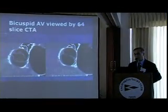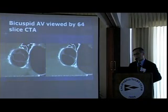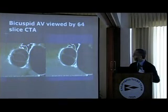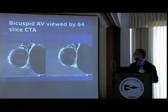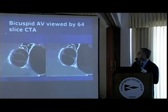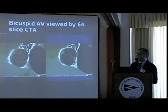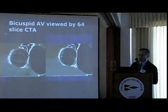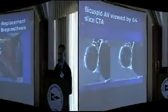Or a bicuspid aortic valve can be completely normal — functioning normally, closes well, and opens normally. This is a pretty pliable bicuspid valve shown on a 64-slice CTA angiogram. You can see the aortic valve opens very nicely with quite pliable leaflets, and here it closes pretty well with not much regurgitation at all.